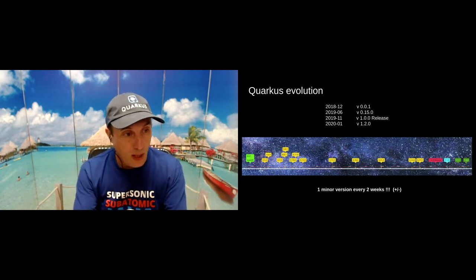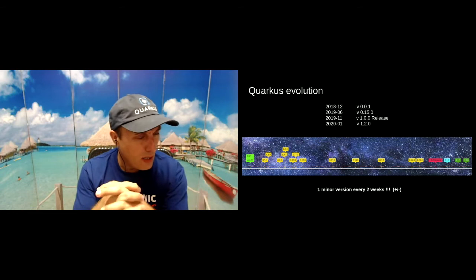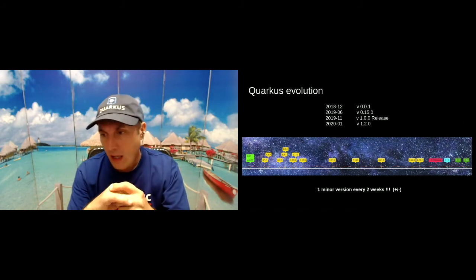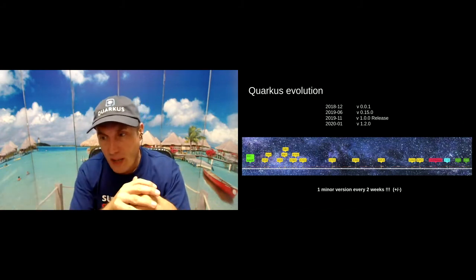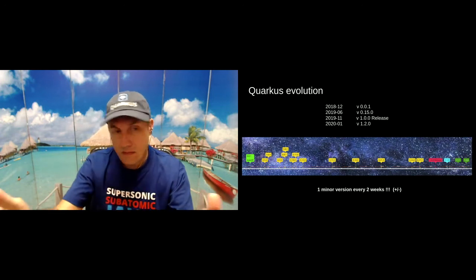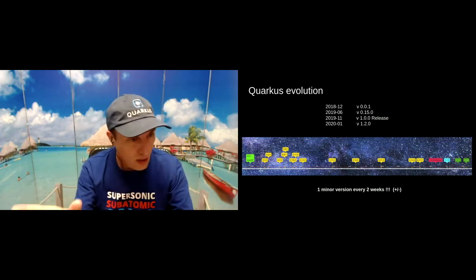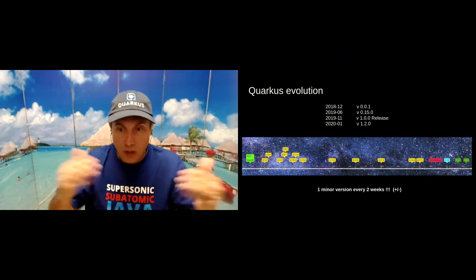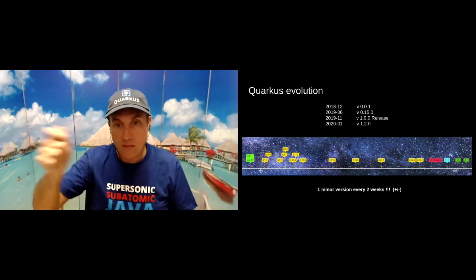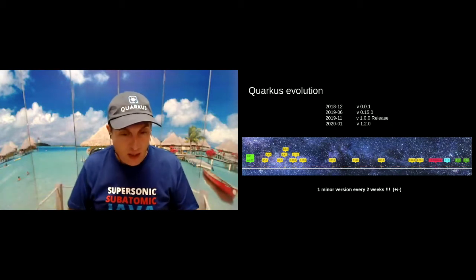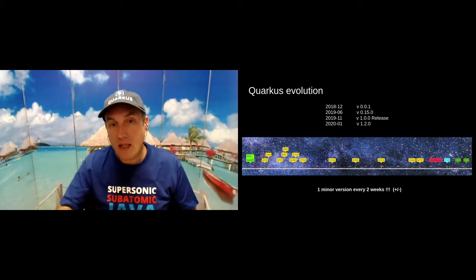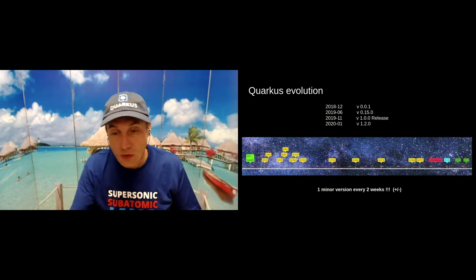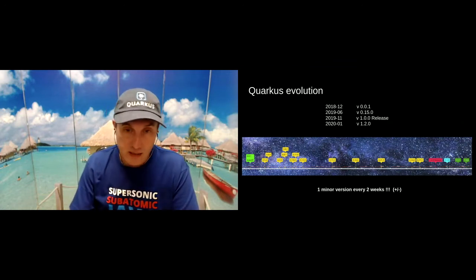About the Quarkus evolution: version 0.0.1 was released more or less in December 2019, and now we are on version 1.7. It's not because they are doing big releases every now and then, but because they are adding minor releases every — in this chart — around two weeks. So there are a lot of changes, really.